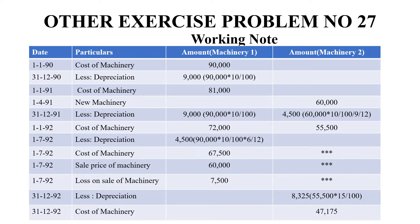At the end of 1991, we calculate depreciation. For the first machinery, the full year depreciation is 9,000. For the second machinery worth 60,000, purchased in the 4th month, we use 9 months: 60,000 × 10/100 × 9/12 = 4,500.